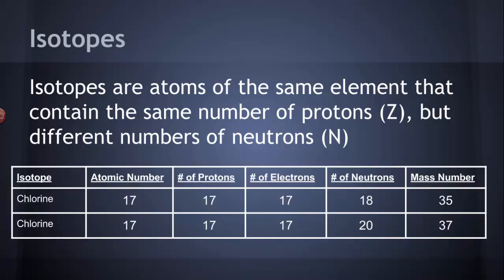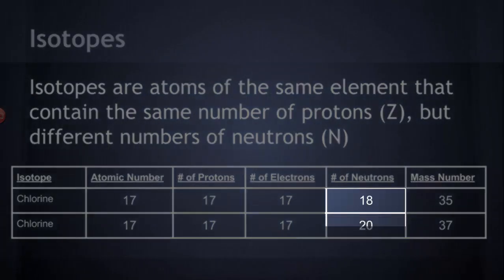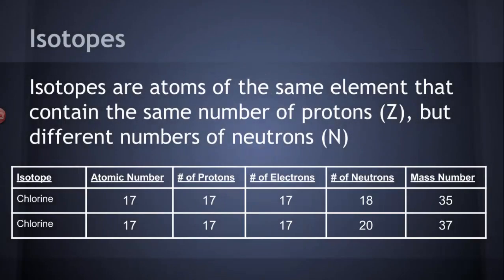We have chlorine. Now chlorine actually occurs in nature, in the universe, as a mixture of two isotopes. Both are called chlorine because they both contain 17 protons. They have an atomic number of 17, 17 protons. If they're neutral, they have 17 electrons. Where they're different is one flavor of chlorine, one isotope of chlorine, has 18 neutrons, and the other has 20. That gives them a slightly different mass. The one with 20 neutrons is a little bit heavier.